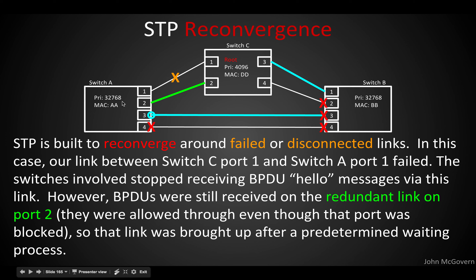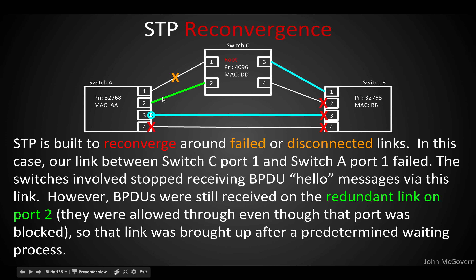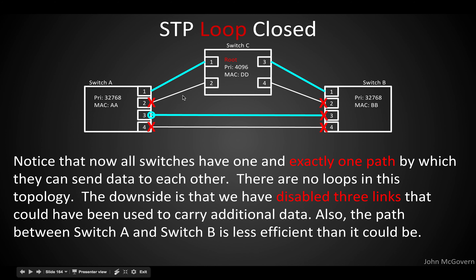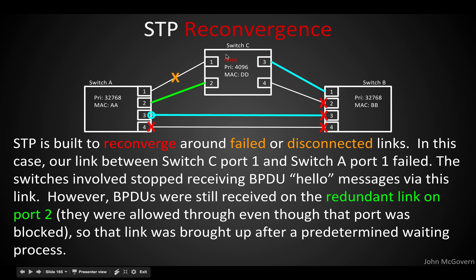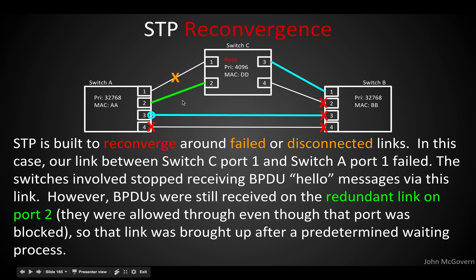BPDUs can be sent across all links to allow spanning tree to work. We avoid infinite looping with BPDUs because a switch receives the BPDU, looks at it, and stops — it doesn't forward it indefinitely. So in the event of a link failure, there's another path through the root bridge via port 2, and spanning tree will bring that path up after going through the listening and learning phases before forwarding again. If both links to the root had failed, switch A could still have used switch B to reach switch C.